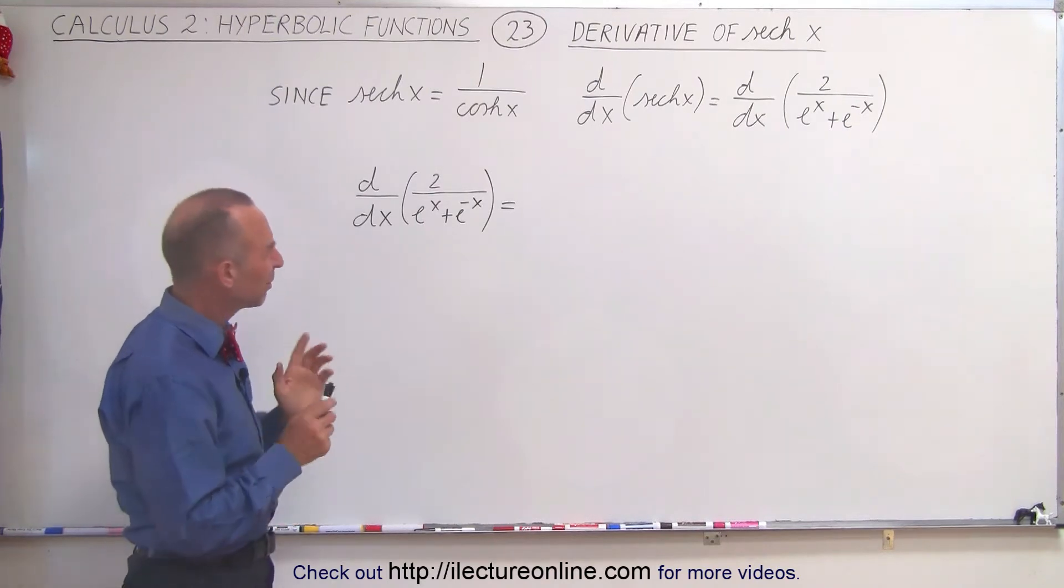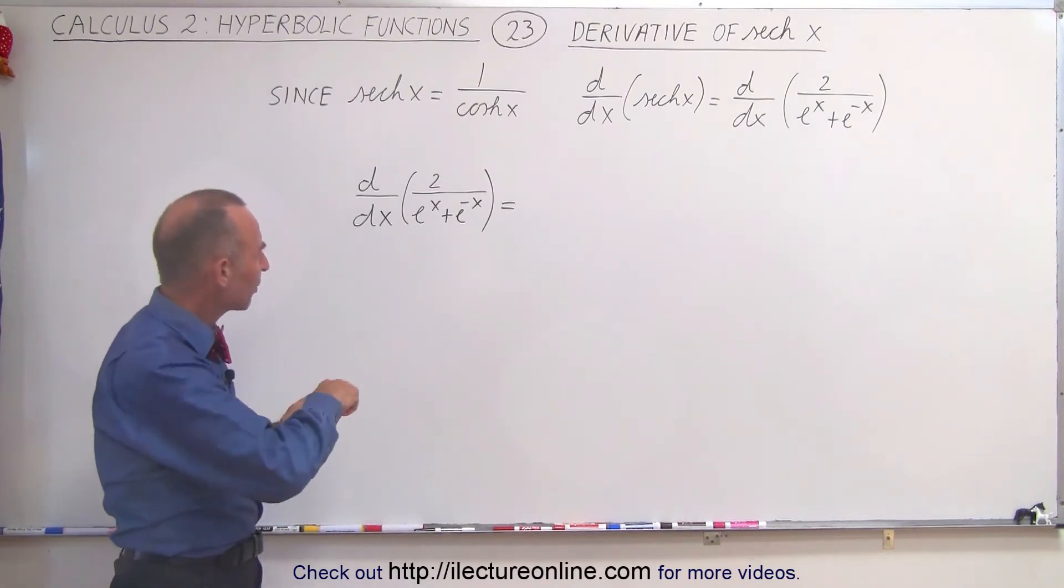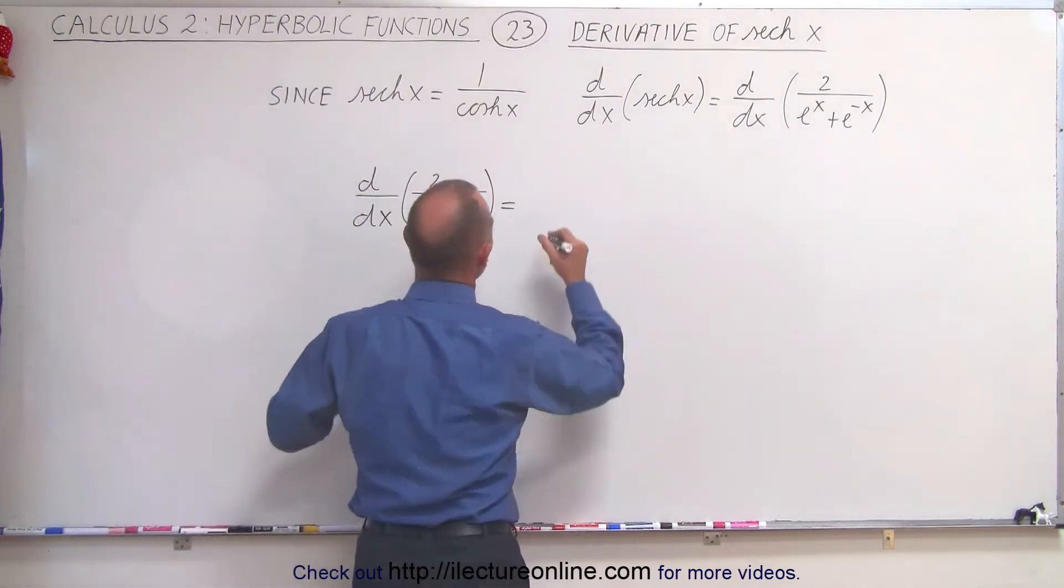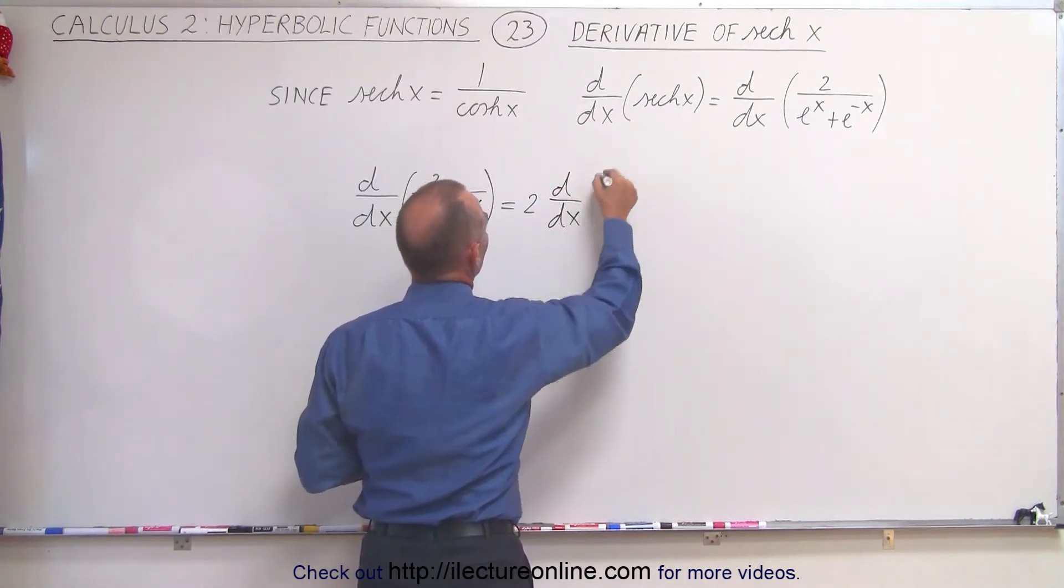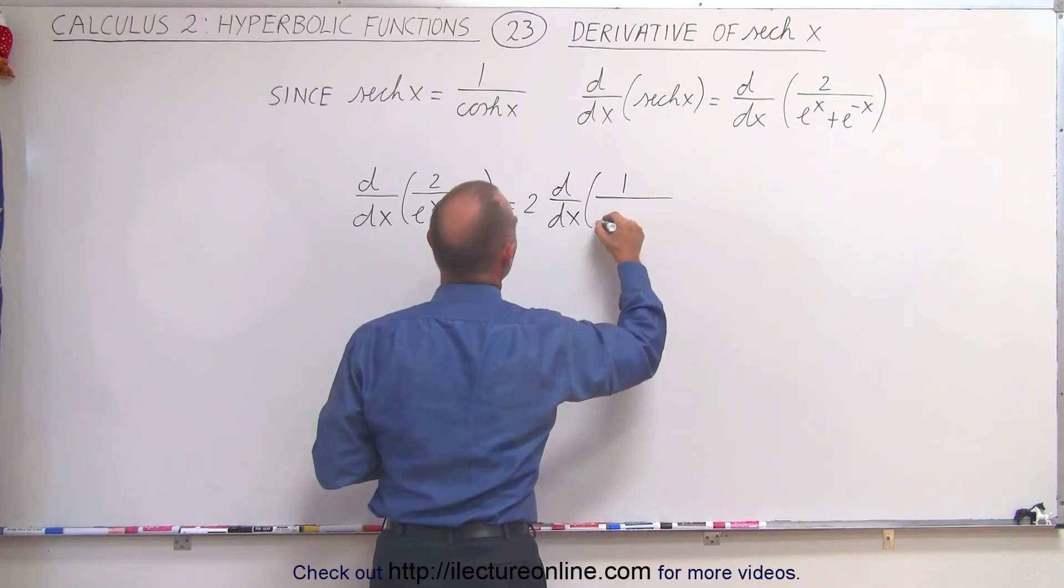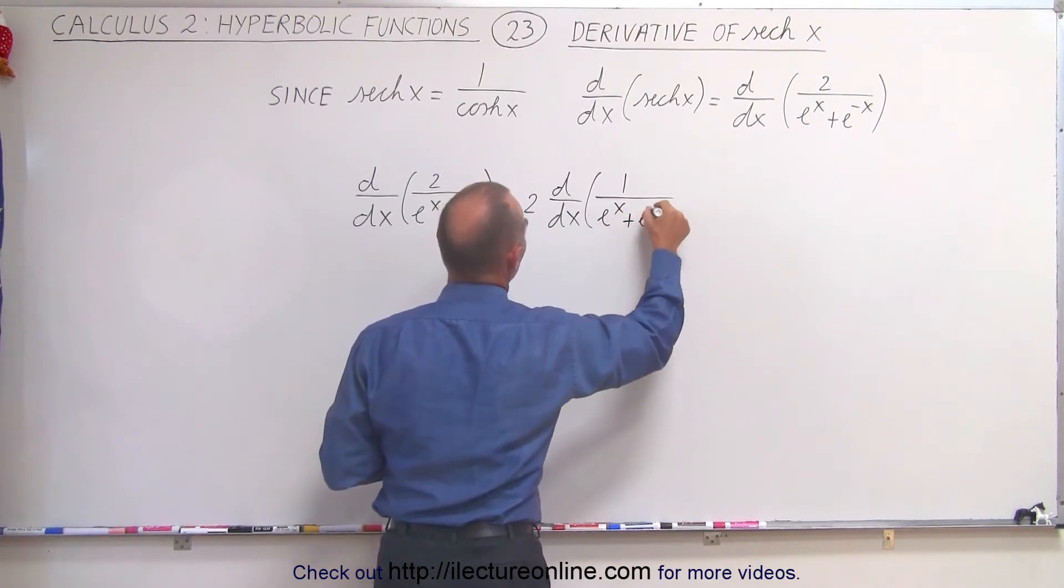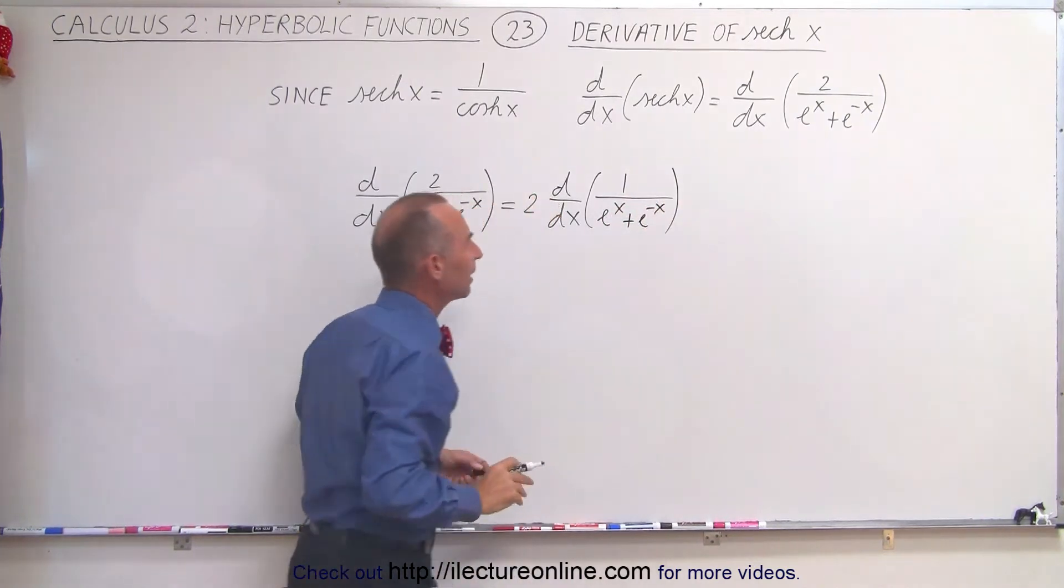This is a quotient, but before we do that, I think I want to factor out the 2. Get rid of the 2 first. So this is 2 times the derivative of 1 over e to the x plus e to the minus x. That may make it a little bit cleaner.